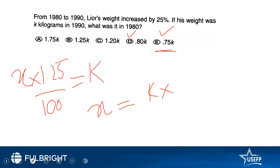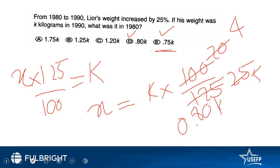So if we rearrange this, x equals k times 100 over 125. This comes out to be 0.80k, this is the correct option.